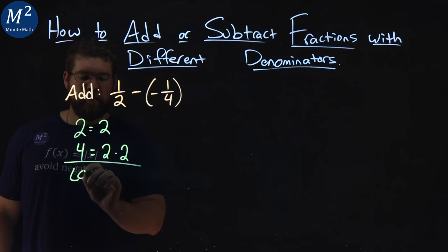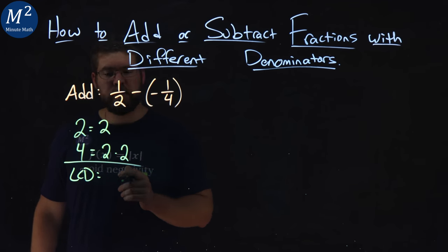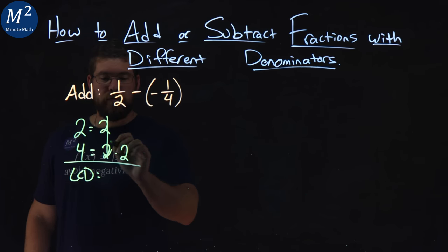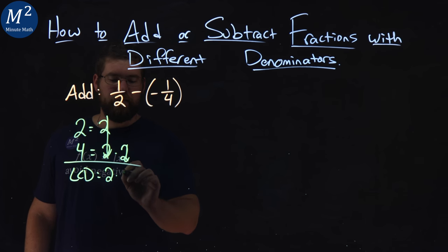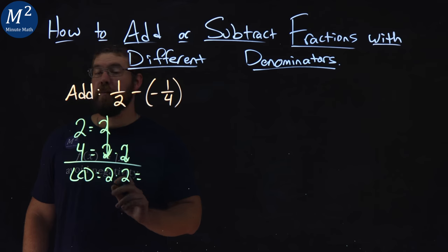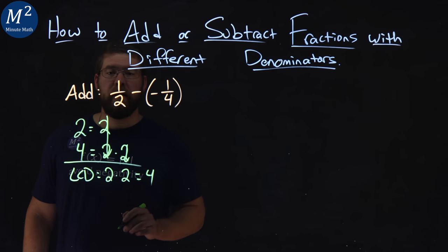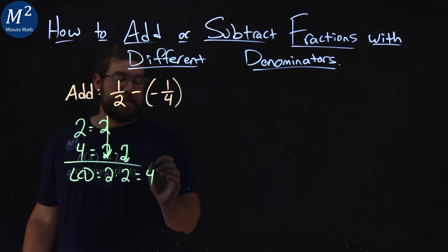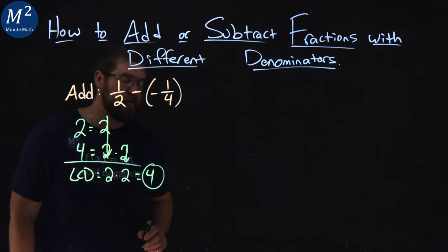If you want to find the LCD of these two numbers, line it up. The two twos come down, leave us one here, this one comes down, two. Two times two comes out to be four. So the LCD of these two fractions is four.